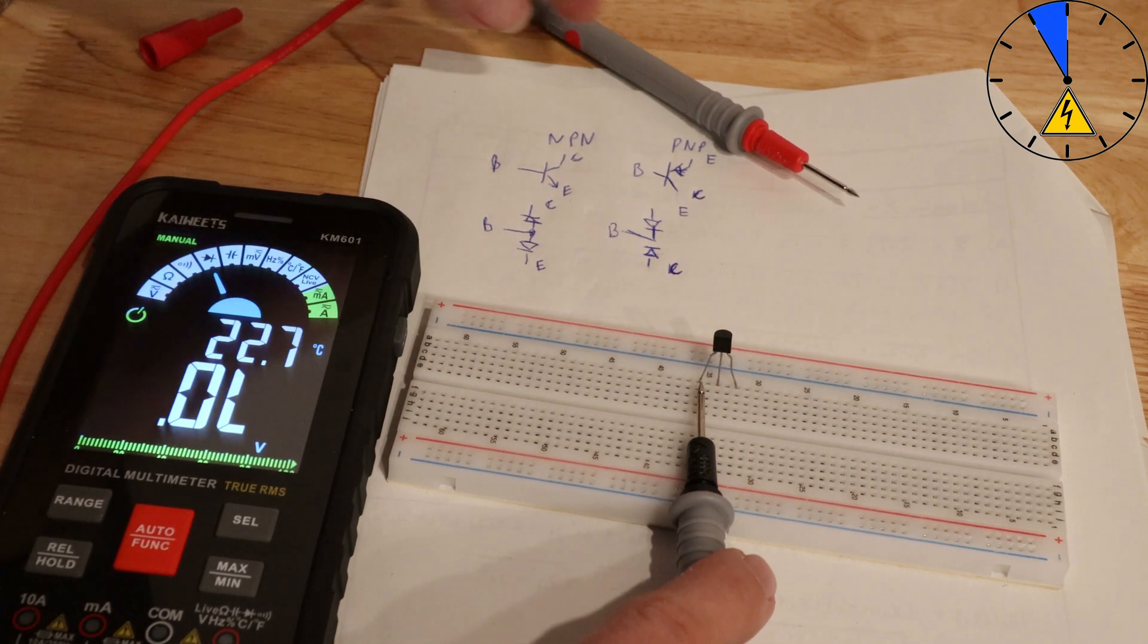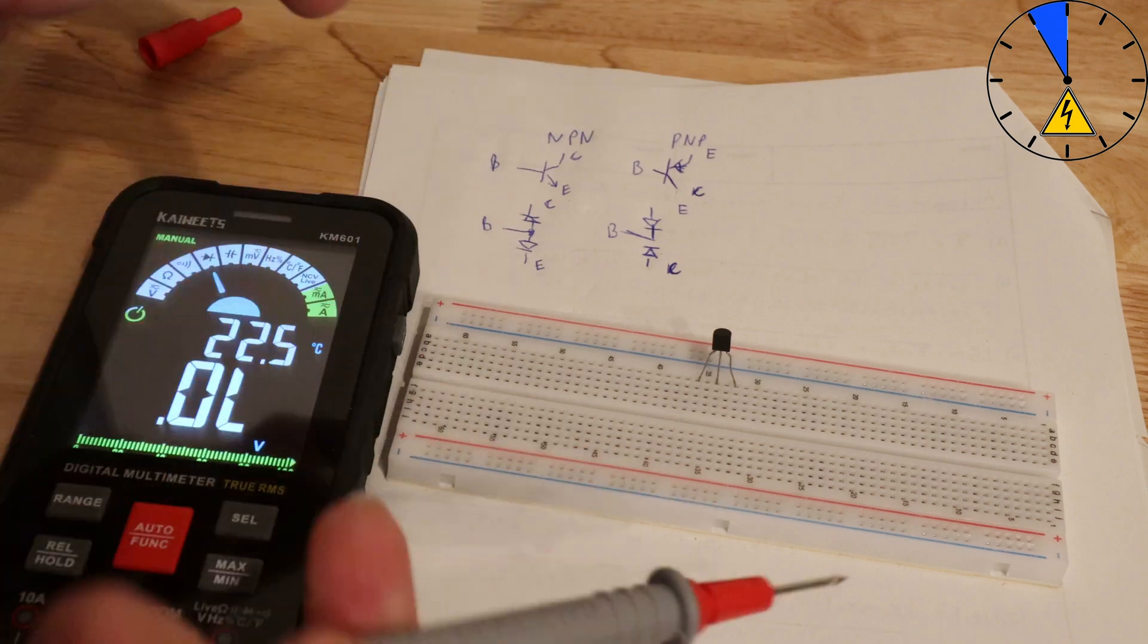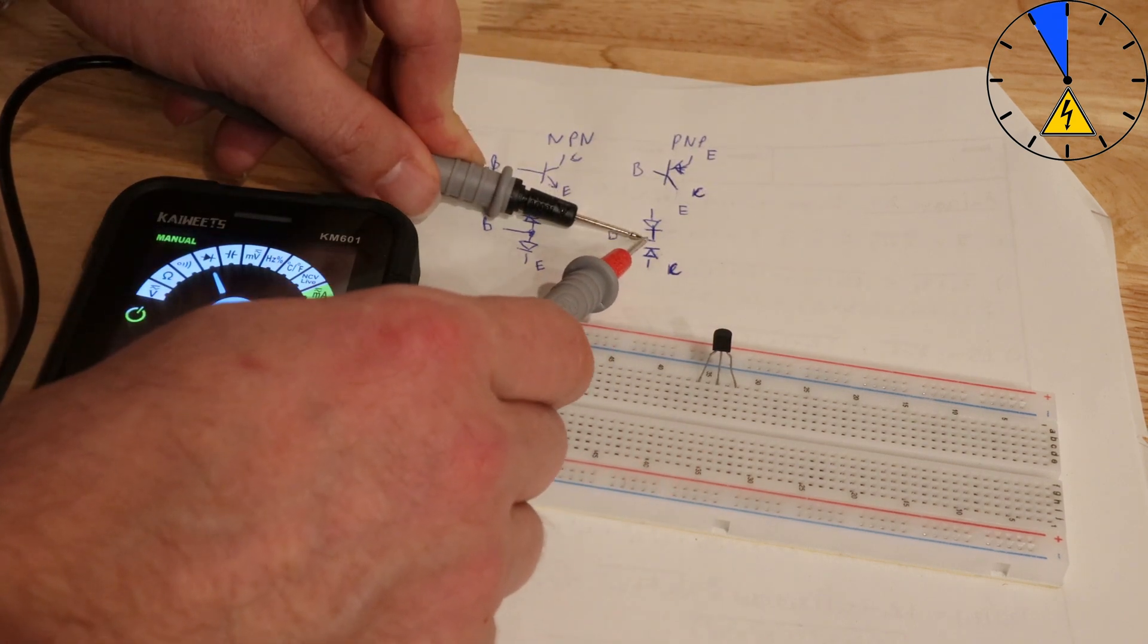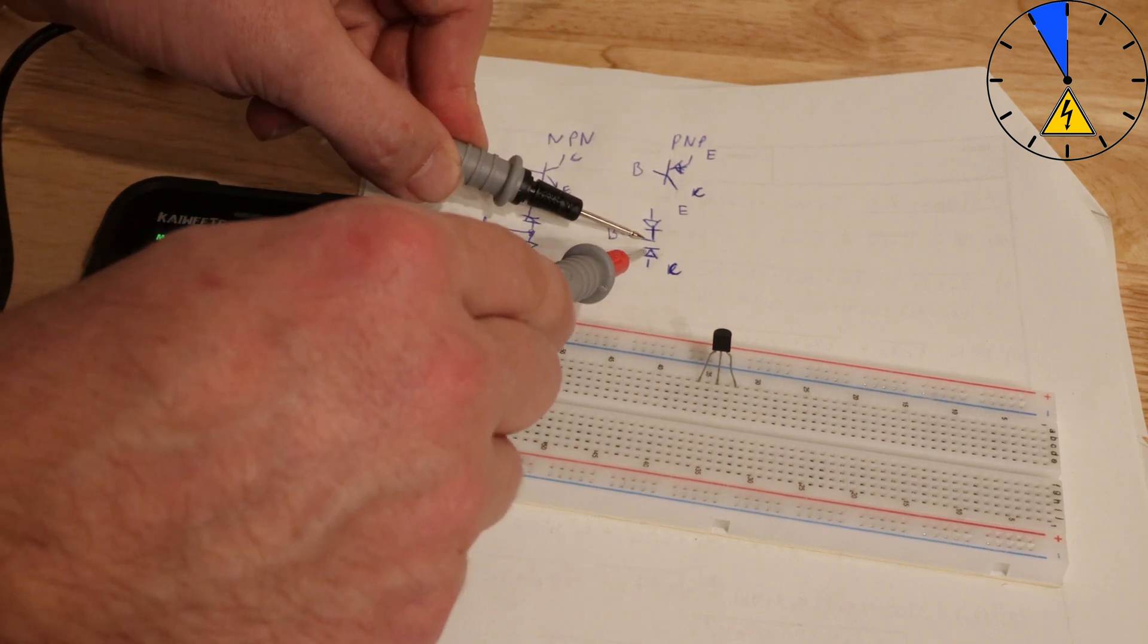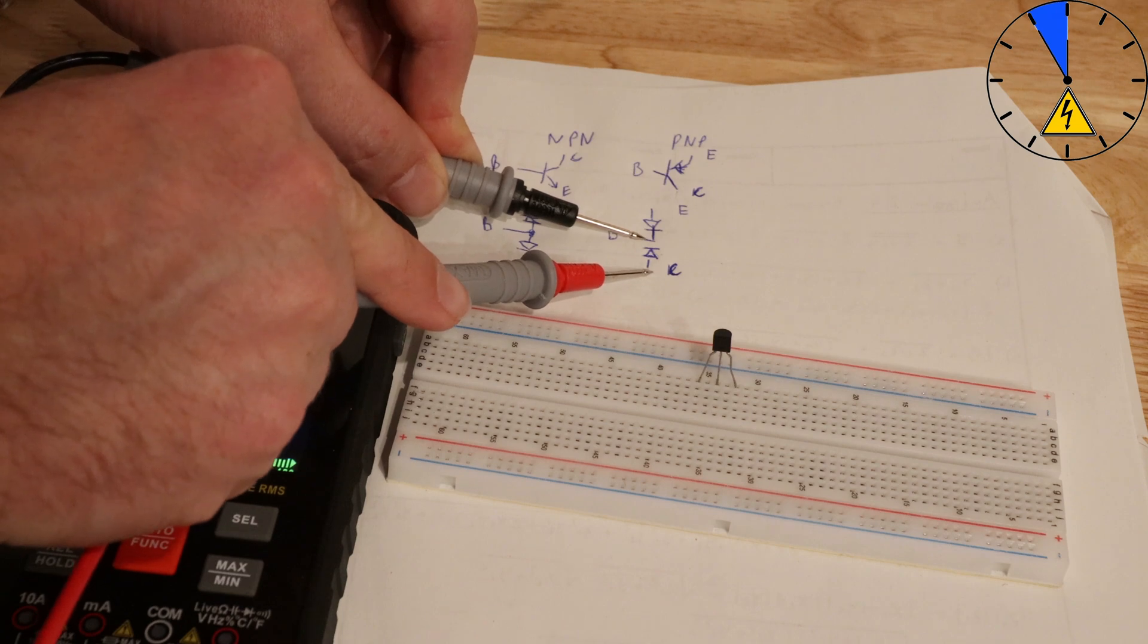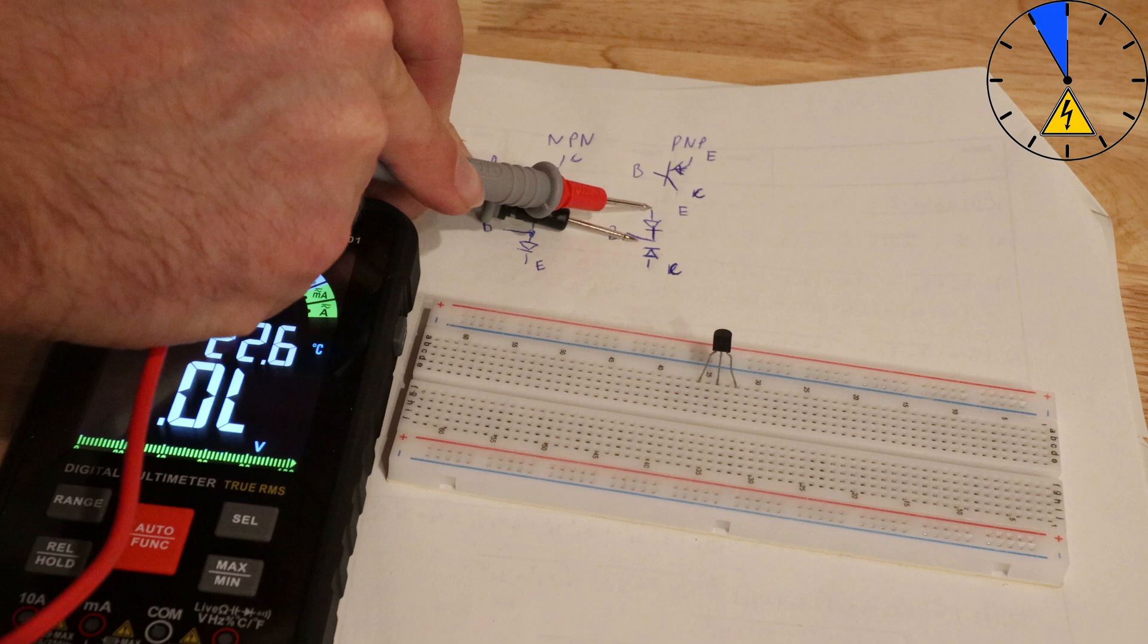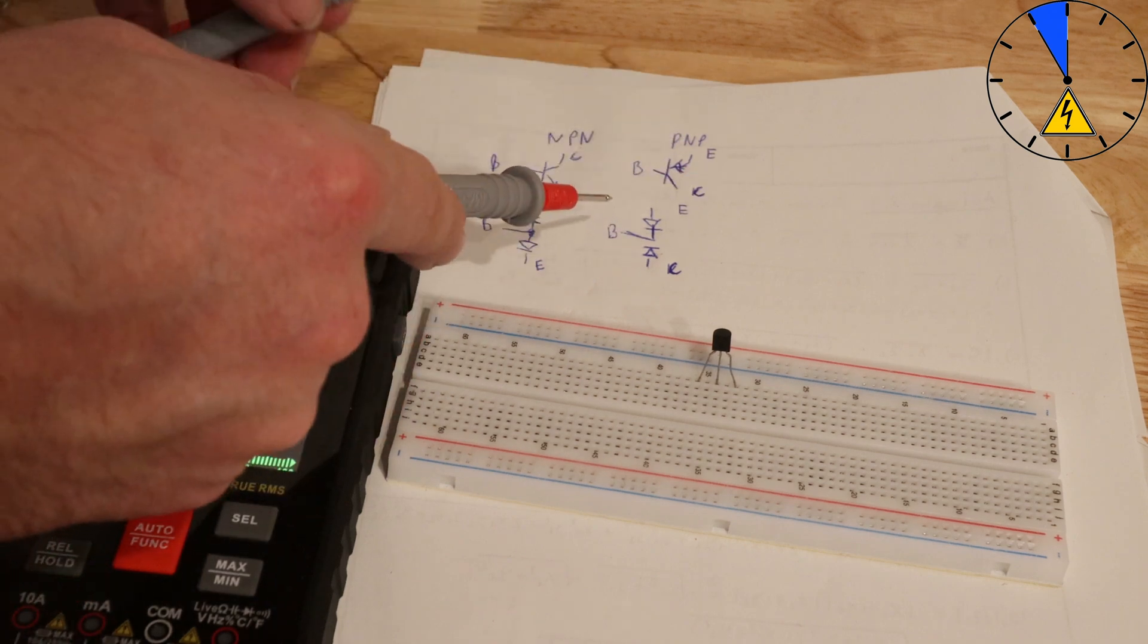And if I had a PNP transistor I have to switch these two, and there will be here at this point, if I go with the minus here on the base and then I measure here from collector to base there is 0.7 voltage, and from here there is a 0.7 voltage. And then I look what is the greatest value and then I know here is the emitter.